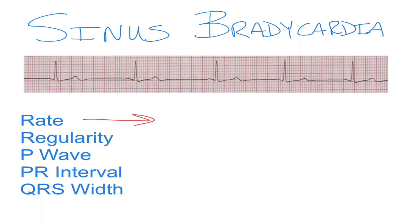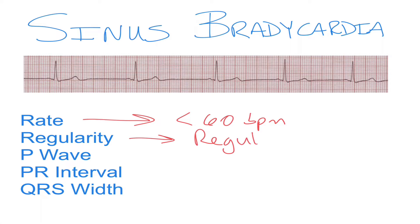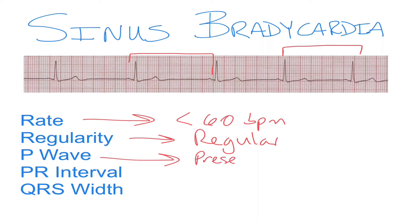Sinus bradycardia is essentially the same thing as a normal sinus rhythm, but at a rate less than 60 beats per minute. The regularity is going to be regular — that means our QRS complexes are going to march out, our P waves are going to march out, and those P waves are going to be present.